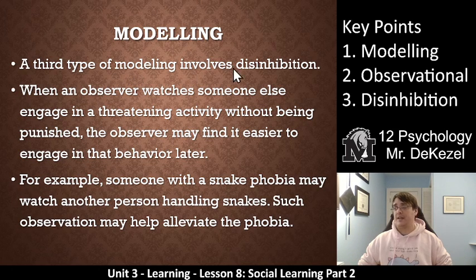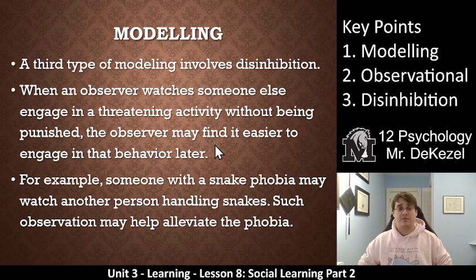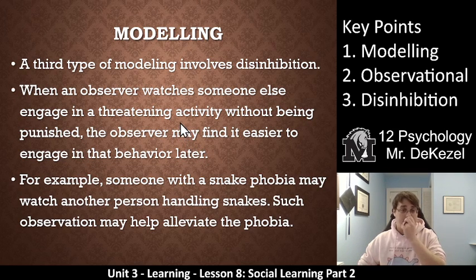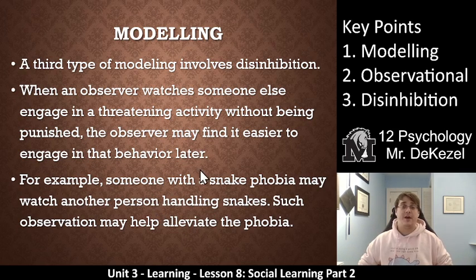The third type of modeling involves disinhibition. When an observer watches someone else engage in a threatening or bad activity without being punished, the observer may find it easier to engage in that behavior later. A famous example is people swimming in the Bellagio fountains in Las Vegas — people do it because there are lots of examples of others not being punished or caught. Someone with a snake phobia may watch another person handle a snake, which might alleviate the phobia. Watching that risky behavior without any punishment helps disinhibit the fear.